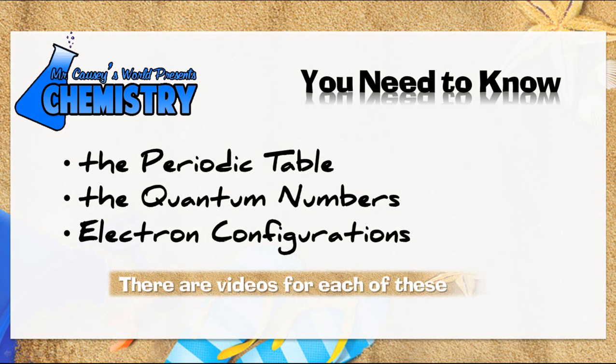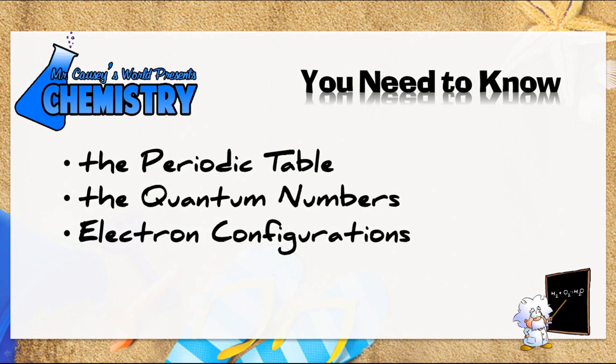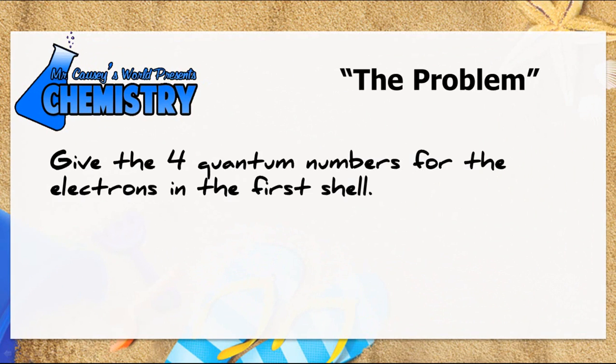Let's see what it's all about. And this week's problem, give the four quantum numbers for the electrons in the first shell. And by first shell we mean first energy level, and that's 1s².